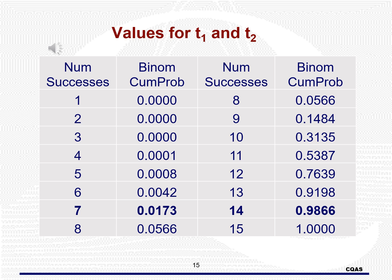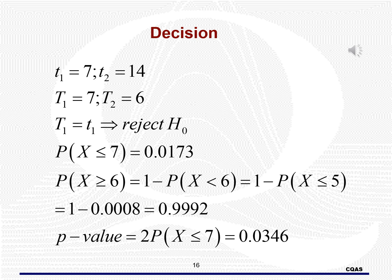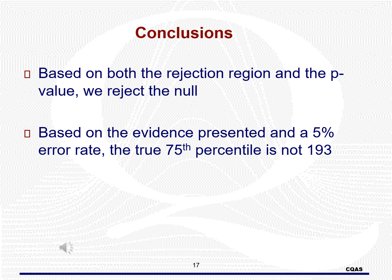Based on the data, we find that T1 equals 7 and T2 equals 6. Since the alternative is two-sided, we check for either-tailed criteria. Since T1 equals the critical value T1, we reject the null. We can also calculate a p-value: the probability that x is less than or equal to 7 equals 0.0173, taken from the binomial table. The probability that x is greater than or equal to 6 equals 0.9992, found as 1 minus the probability that x is less than or equal to 5. Taking two times the minimum of those two probabilities gives a p-value of 0.0346. We reject since that is less than 0.05. Based on the evidence and a 5% error rate, the true 75th percentile is not 193.